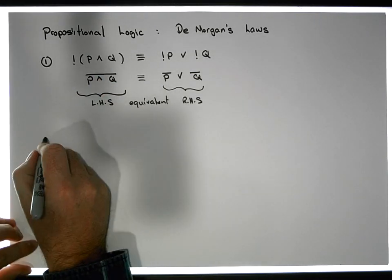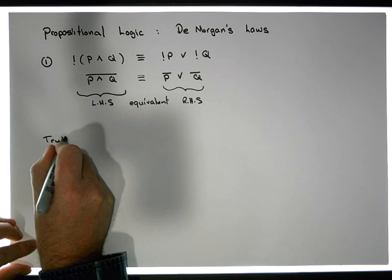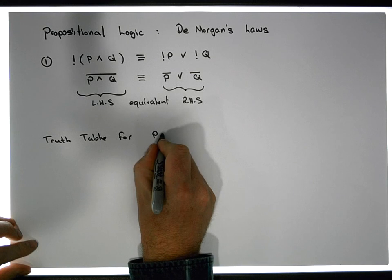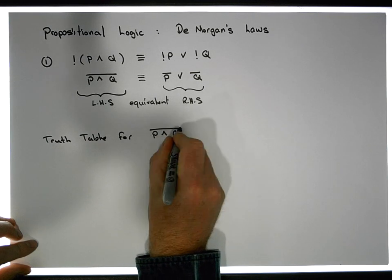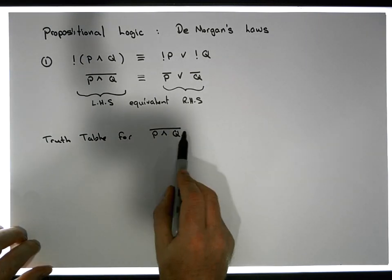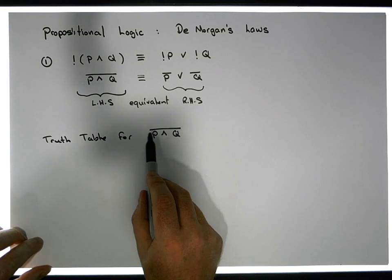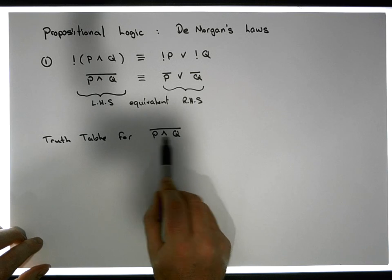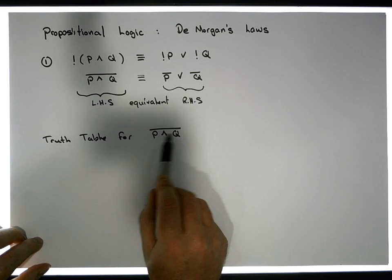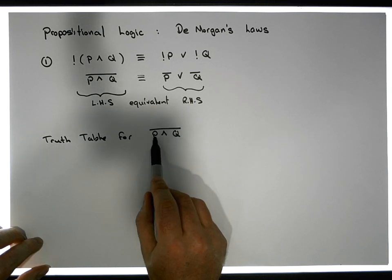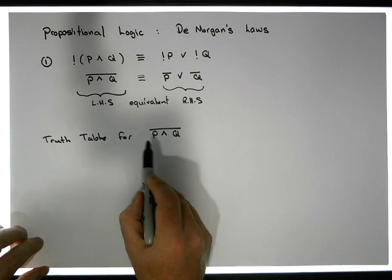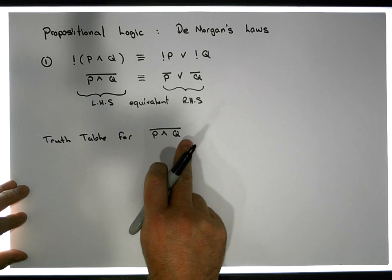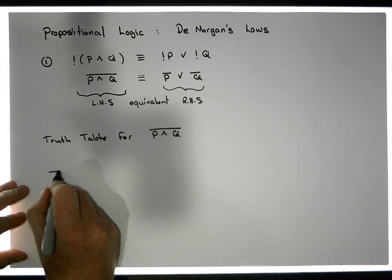Let's do the truth table for P ANDed with Q, its negation. Now, the negation is a unary operator so it can only ever operate on a single proposition. In this case, within the negation we have P ANDed with Q. So we need to evaluate P ANDed with Q first. There are two inputs to this proposition: P and Q. I'm going to list the inputs on the left-hand side of the bar — P, Q — and all the possible truth values they can be in simultaneously.